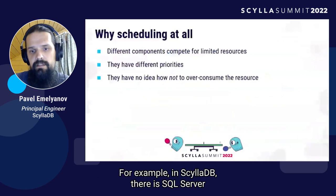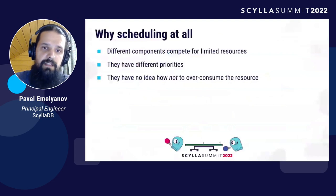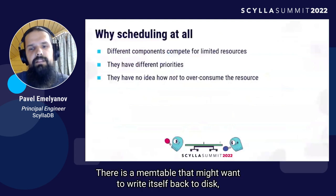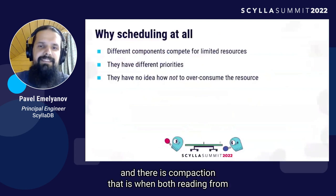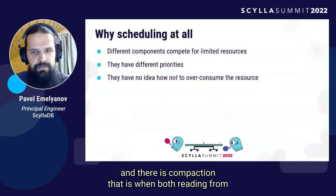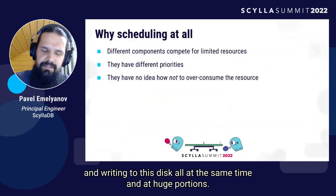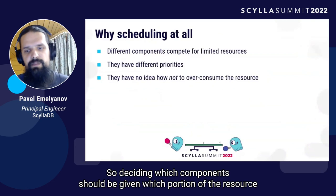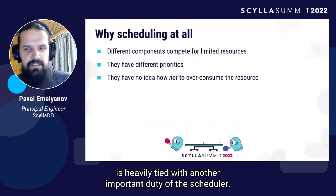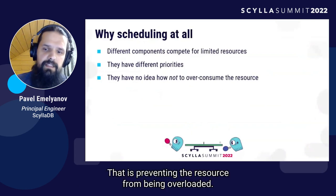For example, in Scylla, there is a SQL server that may want to read a row from disk. There is a memtable that may want to write itself back to disk. And there is compaction that wants both reading from and writing to the disk, all at the same time and in huge portions. Deciding which component gets which portion of the resource is heavily tied with another important duty of the scheduler: preventing the resource from being overloaded.